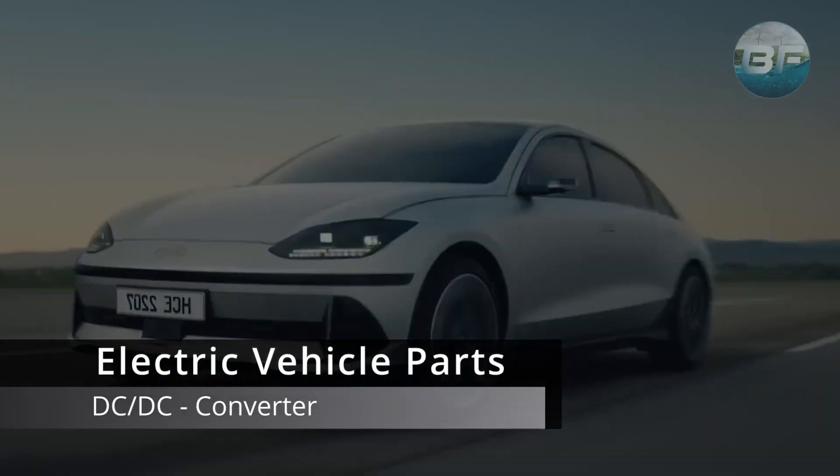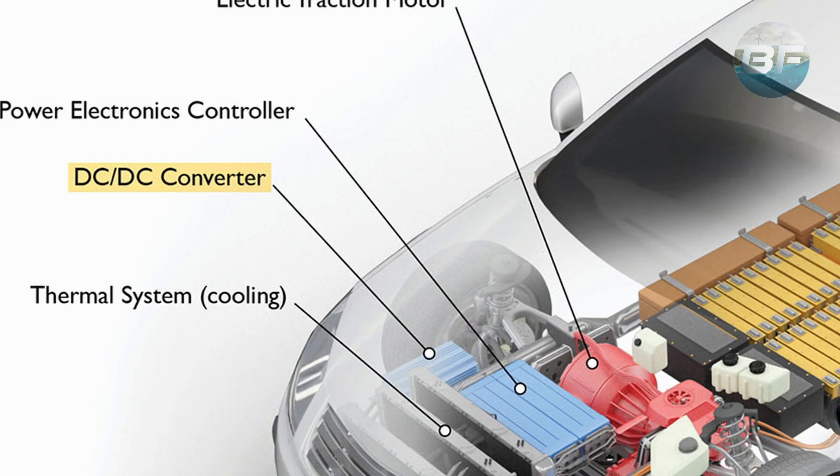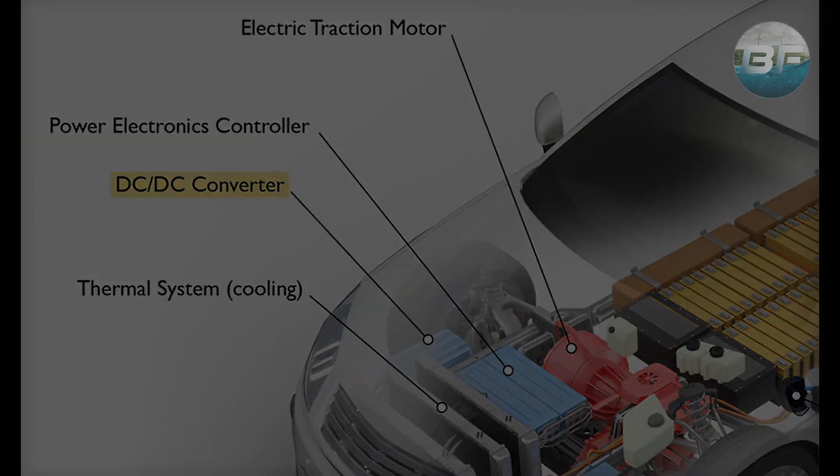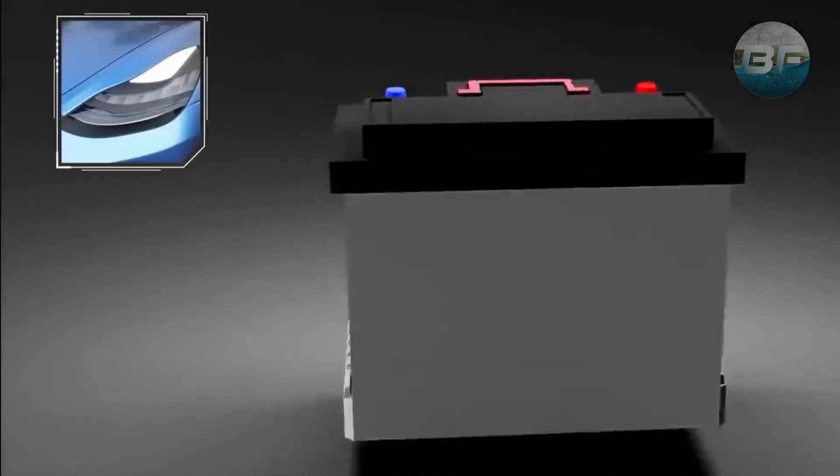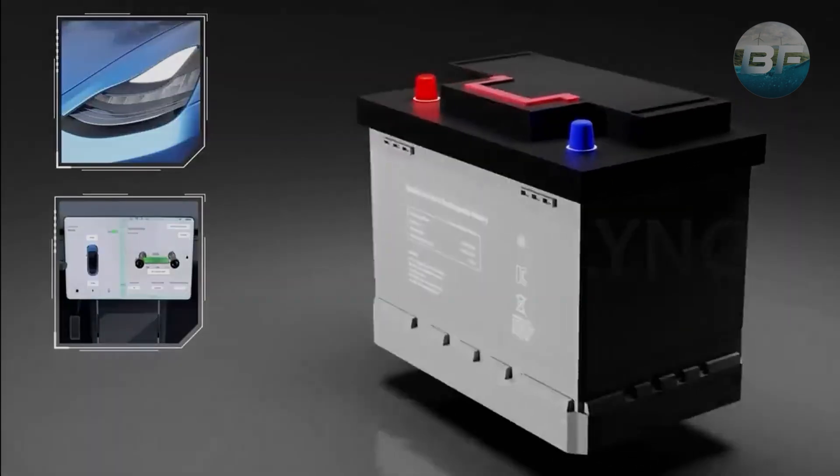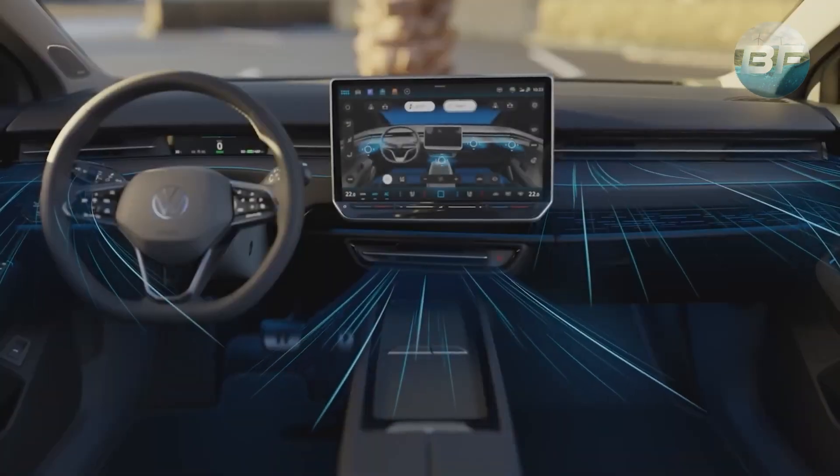An essential part of an electric vehicle's power electronics system is the DC-DC converter. Without it, the high voltage DC power from the battery pack cannot be converted to the low voltage DC power needed to operate the vehicle's accessories.